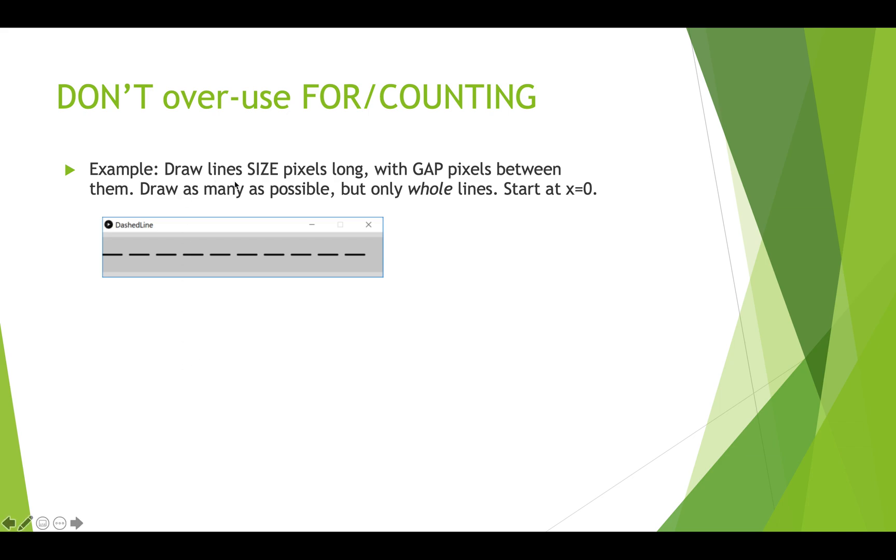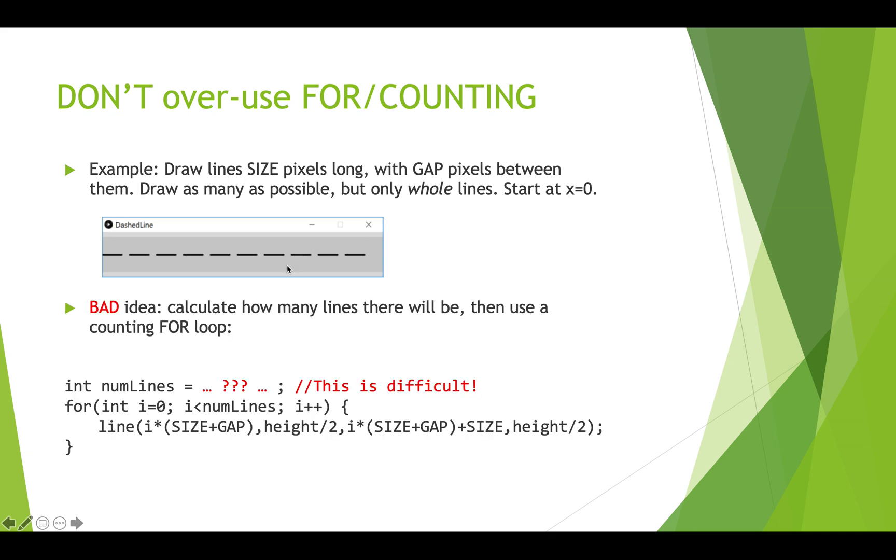So for example, if we want to draw a bunch of lines that are size pixels long, with a gap between each line, so basically, we're drawing like a big dashed line, we want to draw as many as possible, but we only want to draw whole lines. And we want to stop before we draw a partial line that extends past the right side of the canvas, we're going to start at x equals zero. So the bad idea would be to calculate how many lines there needs to be because we've got to calculate the lines and the gaps and divide that by the width and make sure that we have enough space and don't go over the edge.